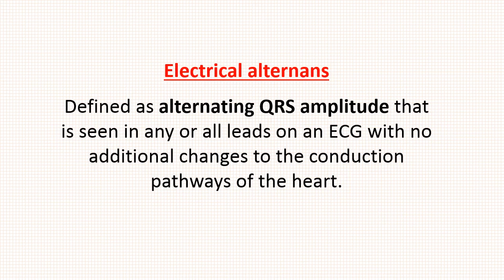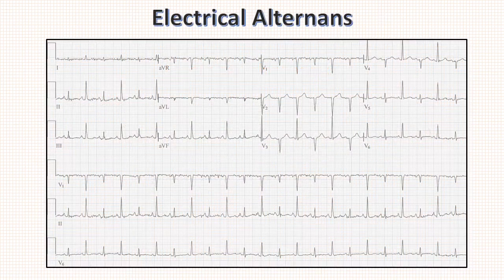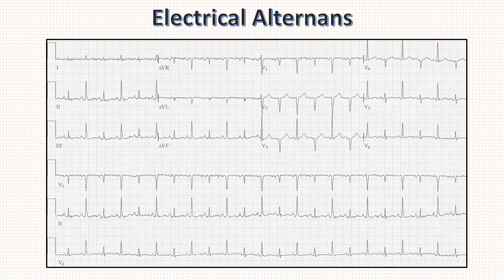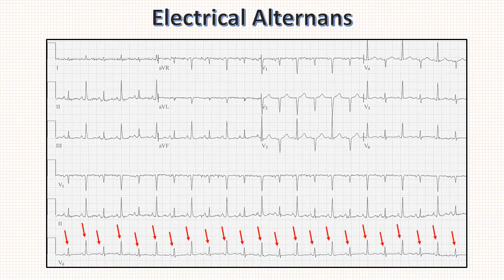First of all, what is electrical alternance — how to define it? It is defined as alternating amplitude of QRS complex that is seen in all leads with no additional changes to the conduction pathways of the heart. As you can see in this ECG, the amplitude of QRS complex varies beat to beat, and this pattern is known as electrical alternance.